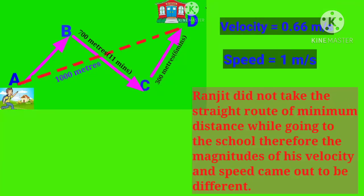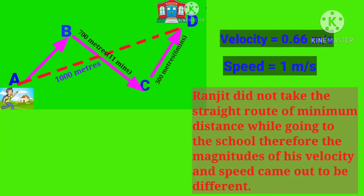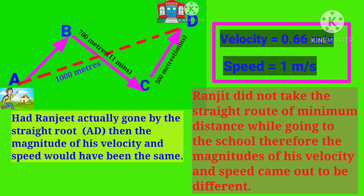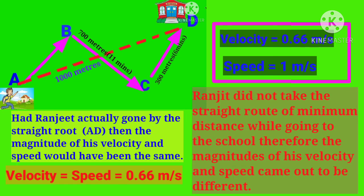Ranjit did not take the straight route of minimum distance while going to school; therefore the magnitudes of his velocity and speed came out to be different. Had Ranjit actually gone by the straight route AD, then the magnitude of his velocity and speed would have been the same.